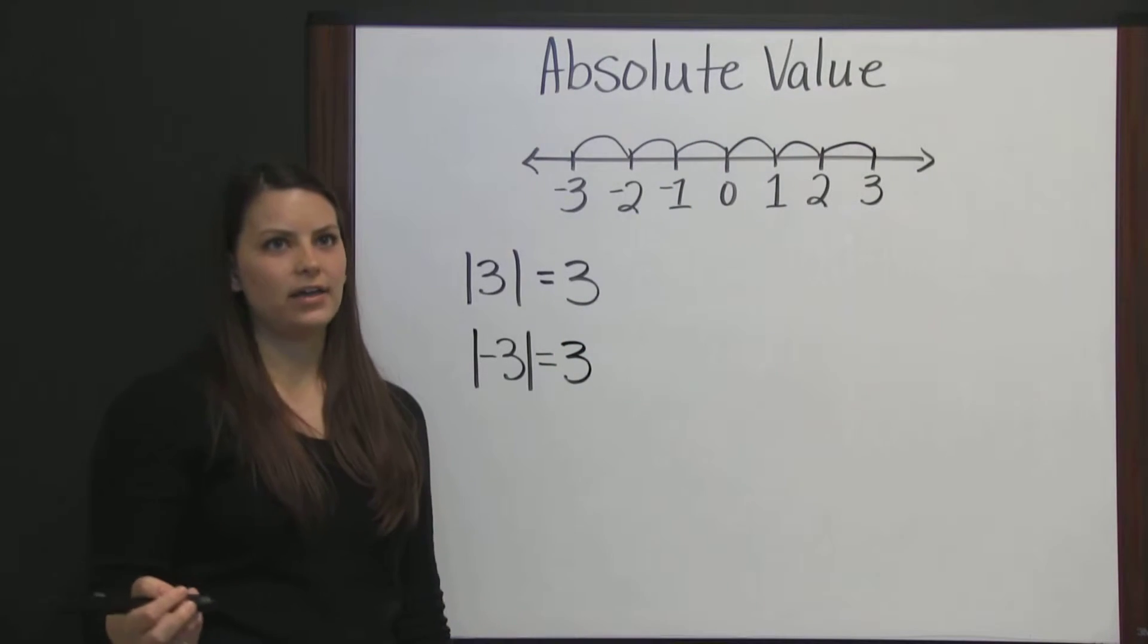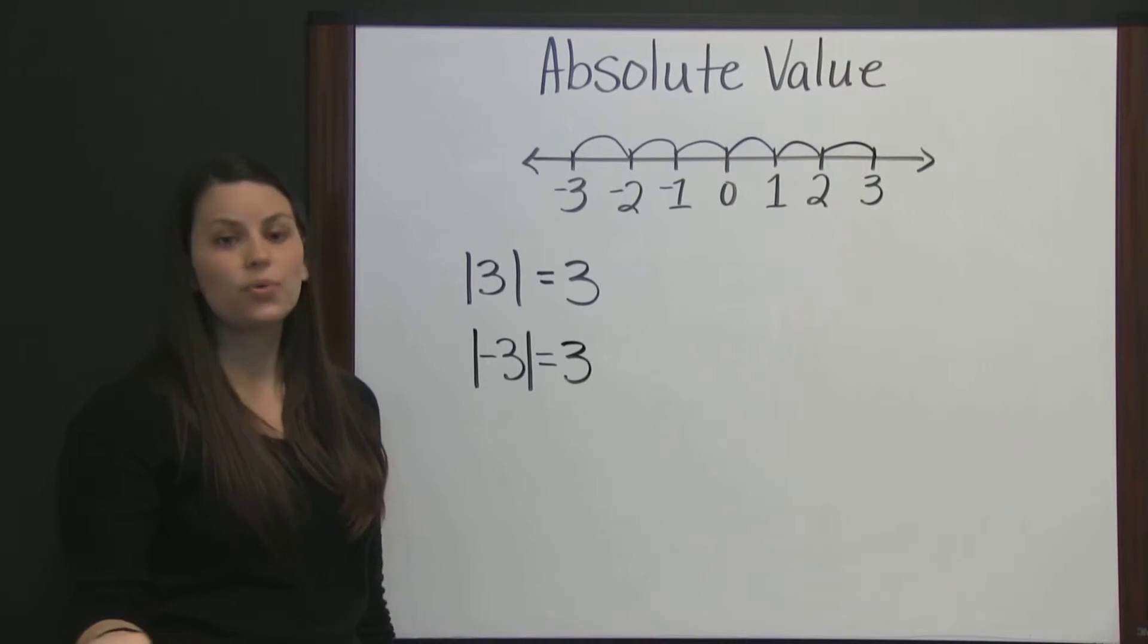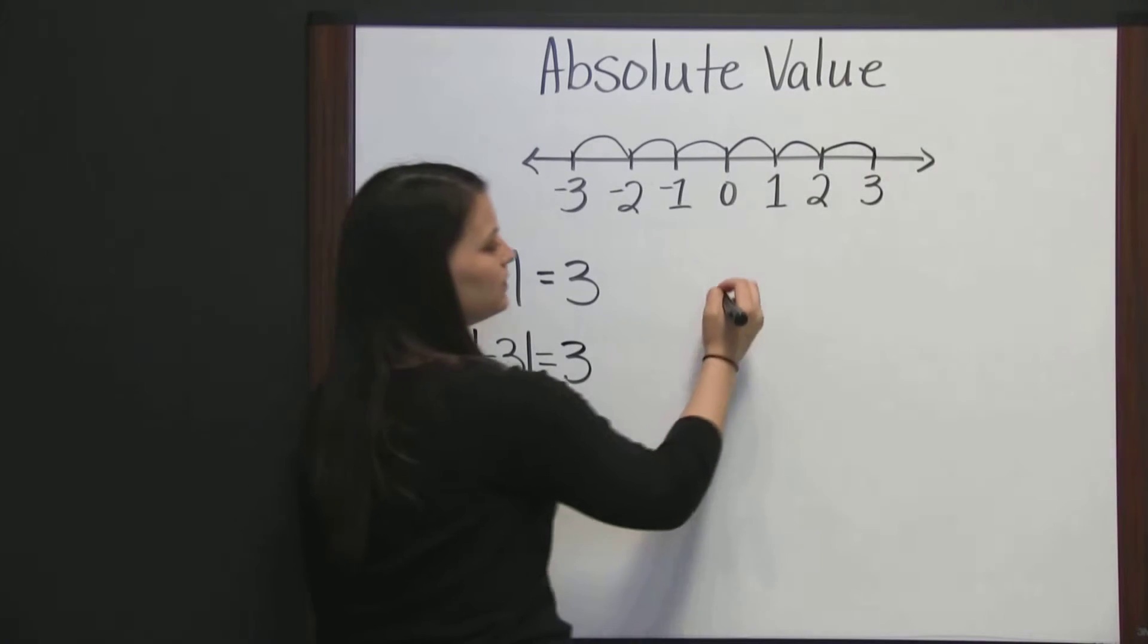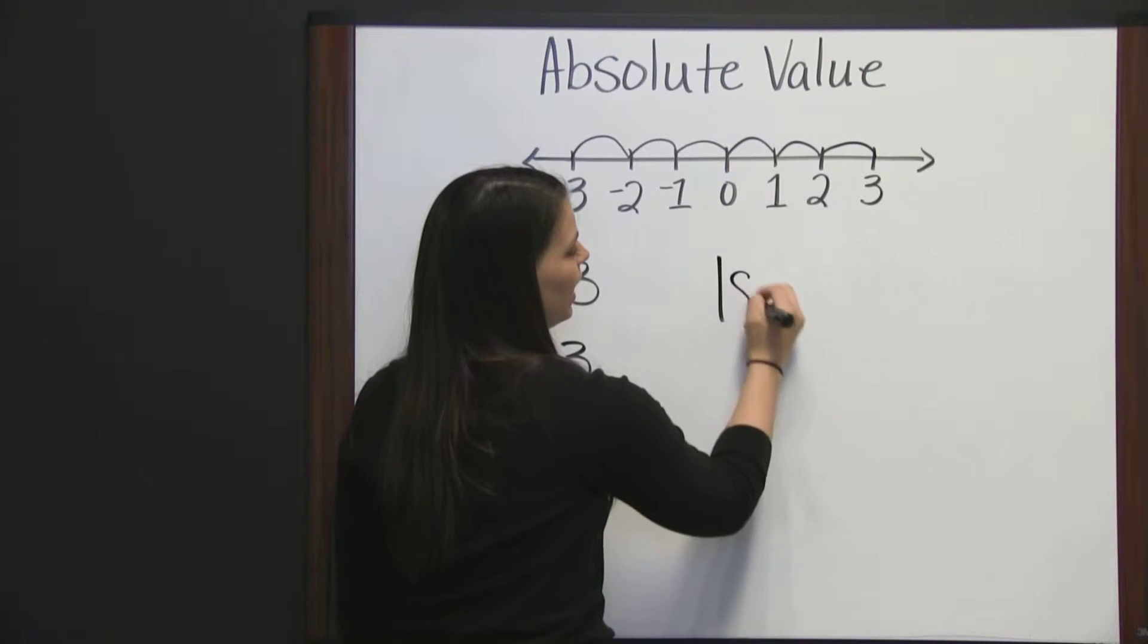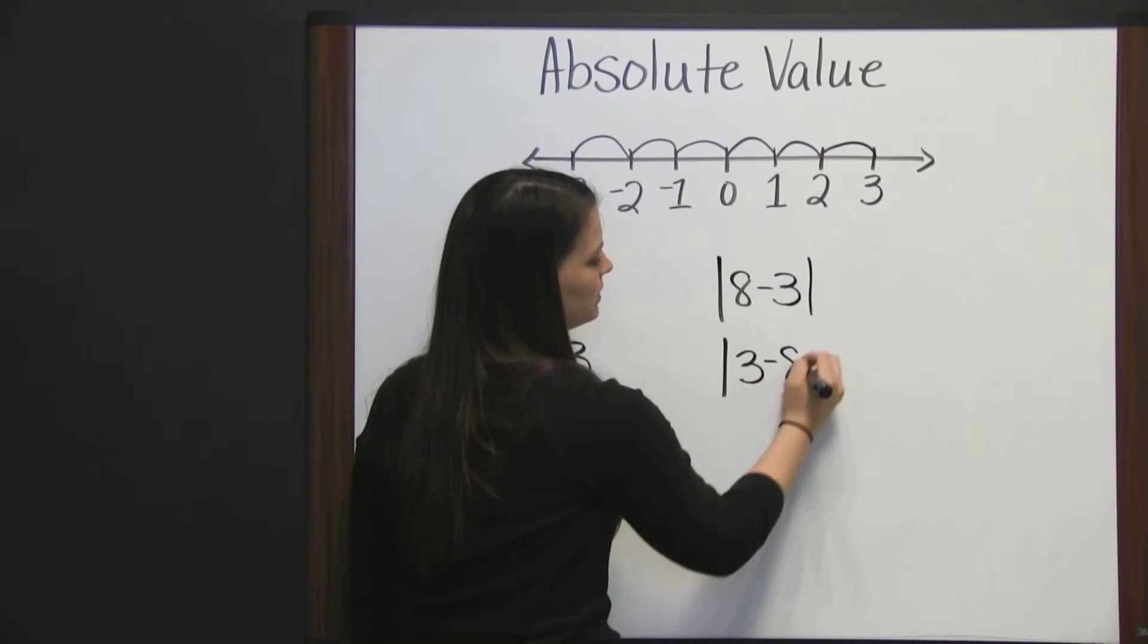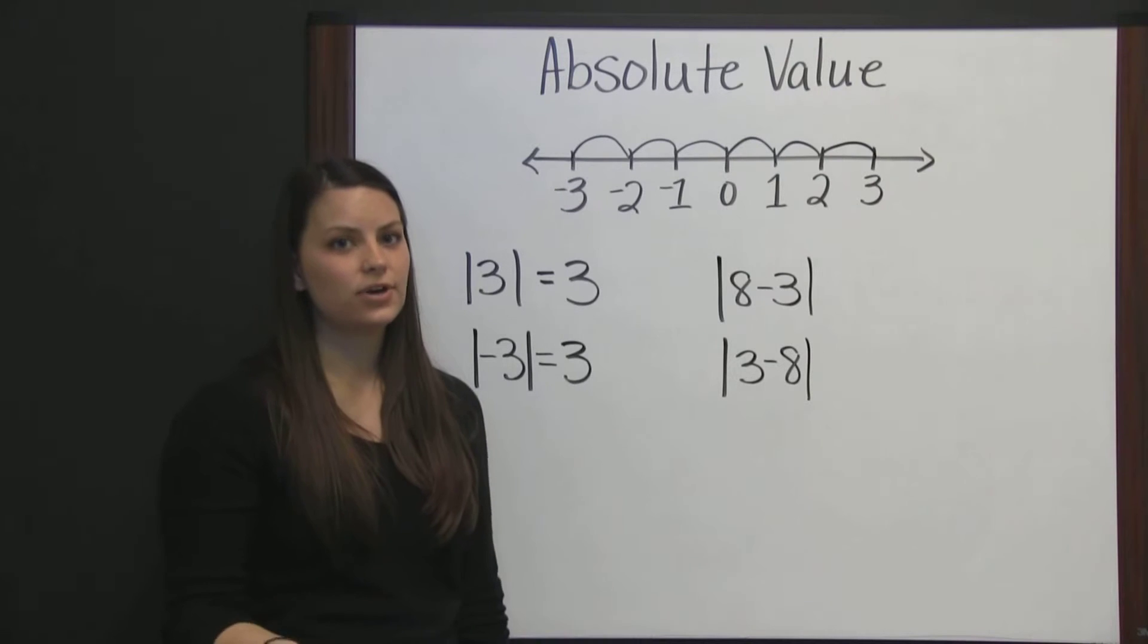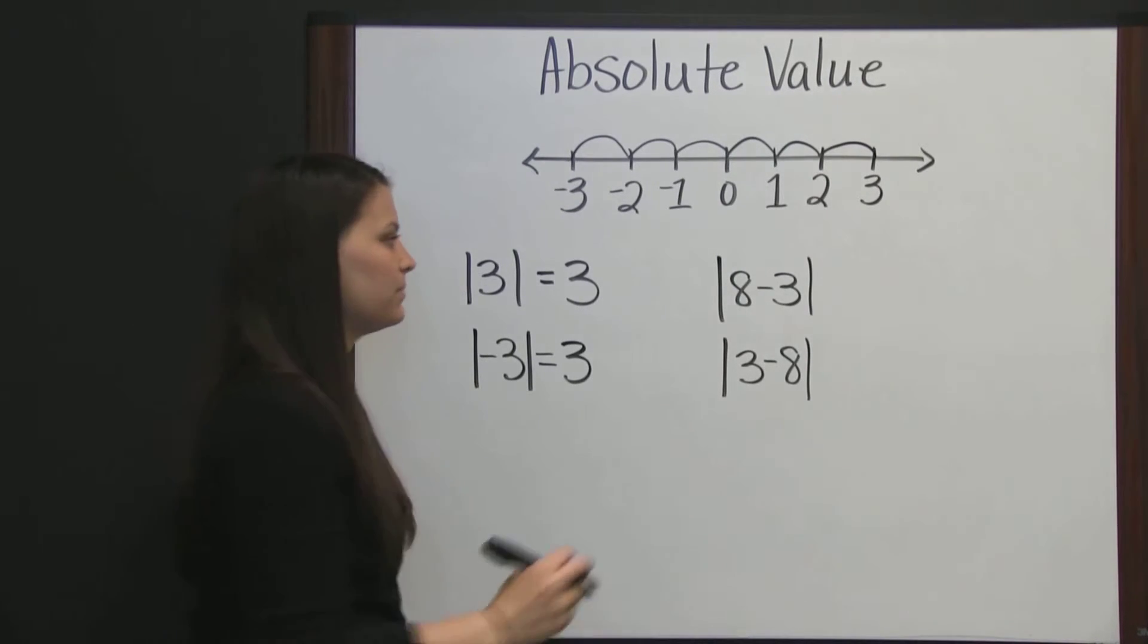The absolute value of a difference, when you're doing that, the order doesn't matter. Let's look at the absolute value of a couple of differences: the absolute value of eight minus three, and the absolute value of three minus eight. When you're doing the absolute value of a difference, again, the order doesn't matter. The result will still be the same. Let's see how that happens.